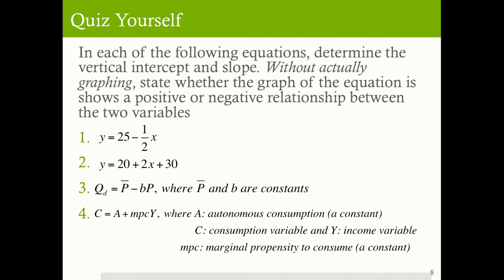Let's do a quiz yourself. For each of the following equations, determine the vertical intercept and slope, and without graphing, state whether the graph would have a positive or negative relationship between the two variables. The first equation is y equals 25 minus one-half x. The second is y equals 20 plus 2x plus 30. The third is q sub d equals p-bar minus bp, where p-bar and b are constants. The final equation is c equals a plus mpc times y, where a is a constant (autonomous consumption), c is consumption, y is income, and mpc is the marginal propensity to consume. Pause the video and try to answer.